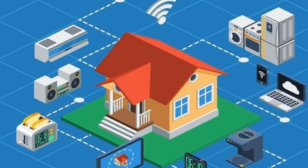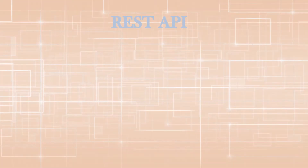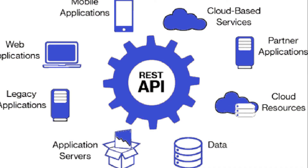To understand how this communication happens, we bring in the REST API. REST API is an application program interface which includes a set of rules that define how an application or device can connect and communicate with each other. REST API is based on integration with cloud apps and IoT devices, and once integrated, communication between the platform, device, and the enterprise can be made more efficient and easier to handle.